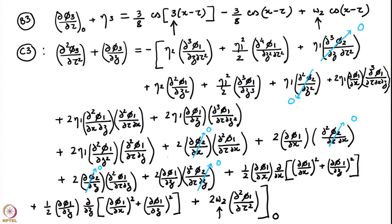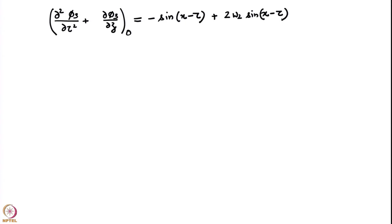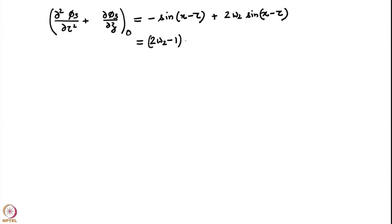After doing all the cancellations, let me write down the final answer — the final answer is extremely compact. Equation C3 in its final form at z=0 equals minus sin(x−τ) plus 2ω₂ minus 30... simplifying: all 11 or 12 terms that survived internally cancelled each other, and we are left with only 2 terms both proportional to sin(x−τ). So this simplifies to (2ω₂ − 1) sin(x−τ).